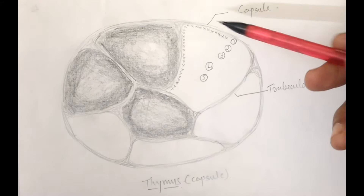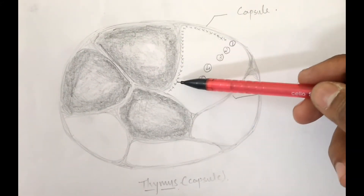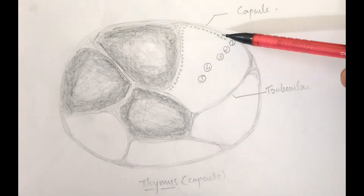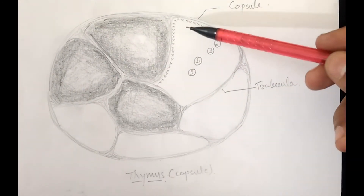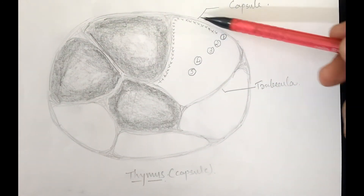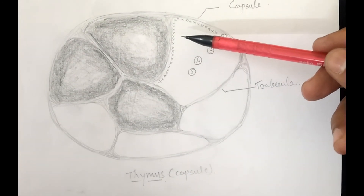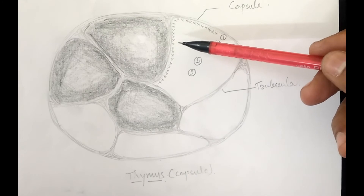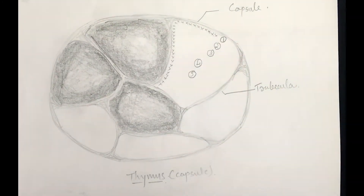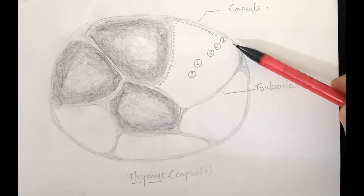A sheet of epitheliosites is present deep to the capsule and septa in the thymus. In this diagram, this line of crosses represents the sheet of epitheliosites. These epitheliosites are present around the septa and capsule, and they cover the blood vessels present in the trabecula. In this way they form an effective barrier known as the blood-thymus barrier.